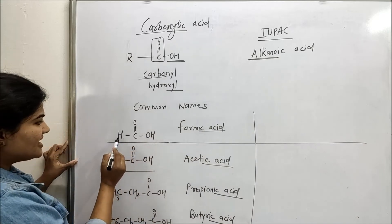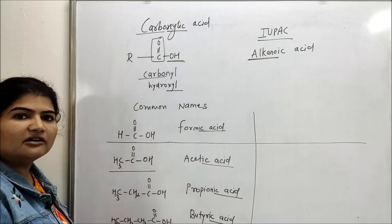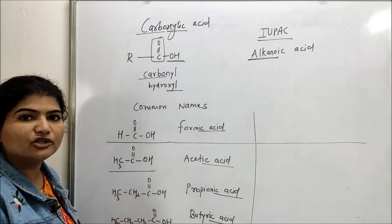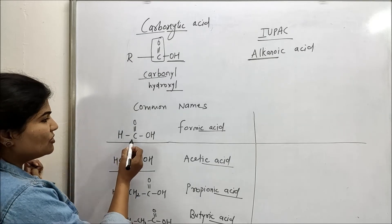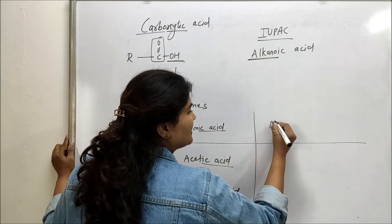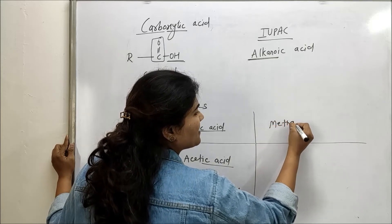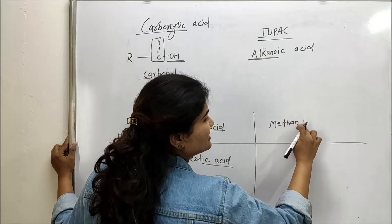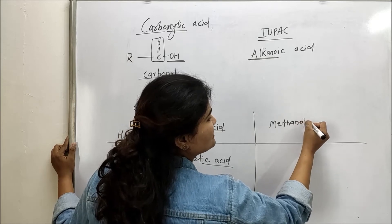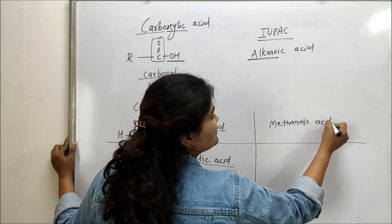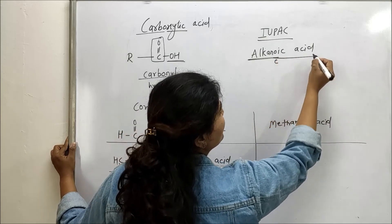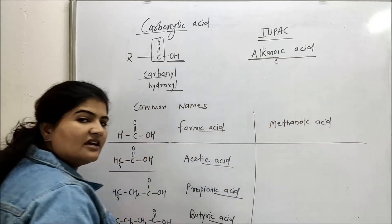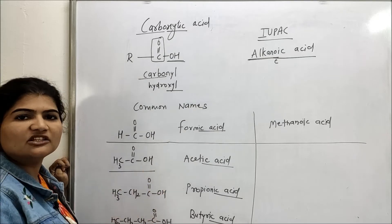So this is HCOOH and the parent for this is going to be methane because there is only one carbon. So methane is going to be my parent. So E of that will be replaced by OIC acid. So the name becomes methanoic acid. E of alkane is replaced by OIC acid. So the name becomes alkanoic acid. In this case methanoic acid.